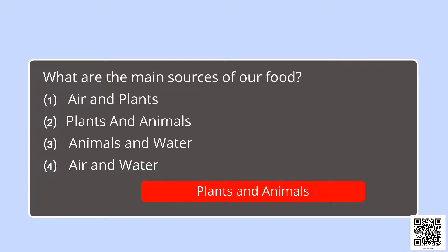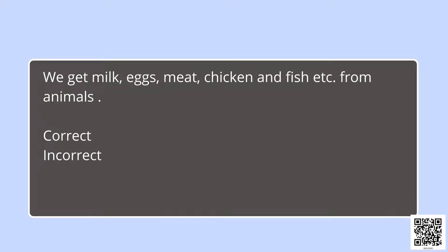Now I will give you a statement. You have to tell whether it is correct or incorrect. The statement is: we get milk, eggs, meat, chicken, fish, etc. from animals. Is it correct or incorrect? Students, it is the correct answer.